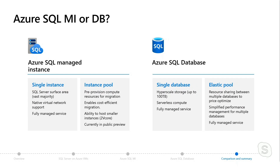Now before, when we talked about managed instance, your first choice was to choose a SQL instance or an instance pool. For database, you have a similar choice. You're going to pick a single database with several different options which we'll talk about, or something called an elastic pool.